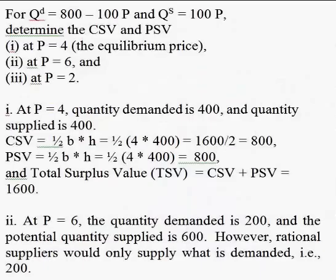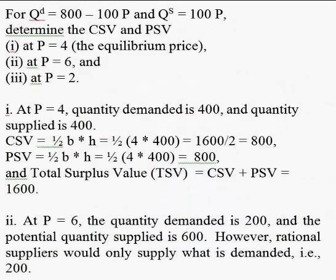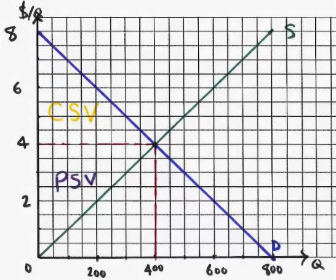For instance, for the demand given by Q equals 800 minus 100p, and the supply equation given by Q equals 100p, at a price of 4 — which happens to be the equilibrium price — we can say that every consumer who is currently purchasing the product for $4, who thinks the product is worth at least $4, that consumer is earning surplus value. For example, the consumer who believes it is worth $5 but ends up paying the market equilibrium price of $4 is said to obtain $1 of surplus value. That consumer obtained for $4 a product he thinks is worth $5.